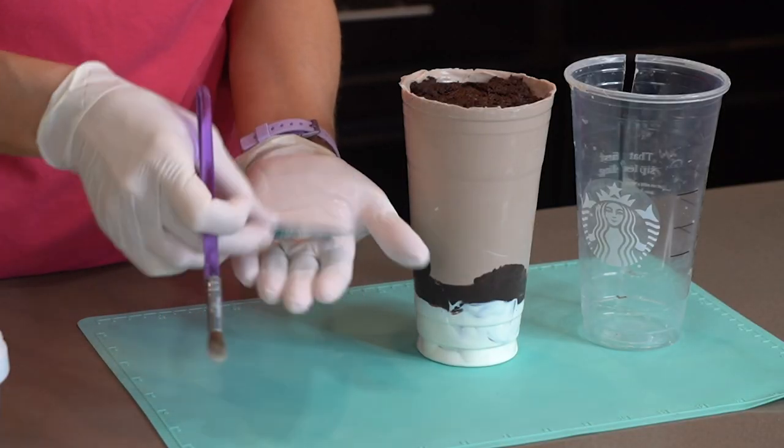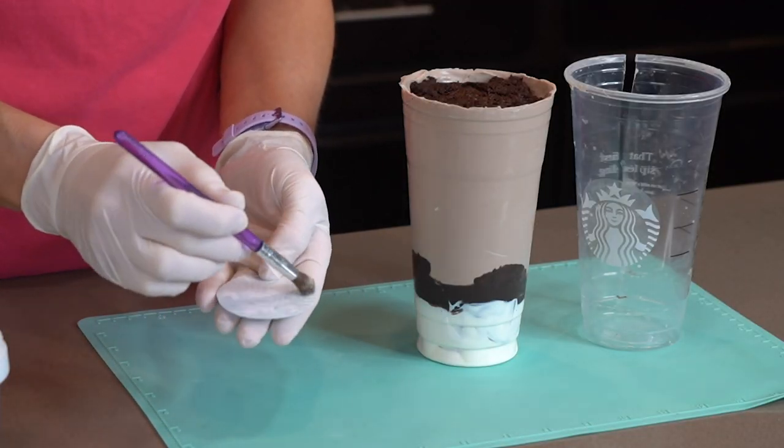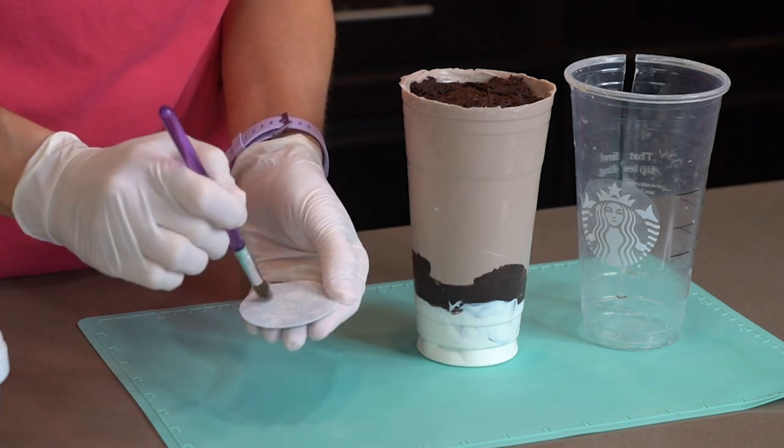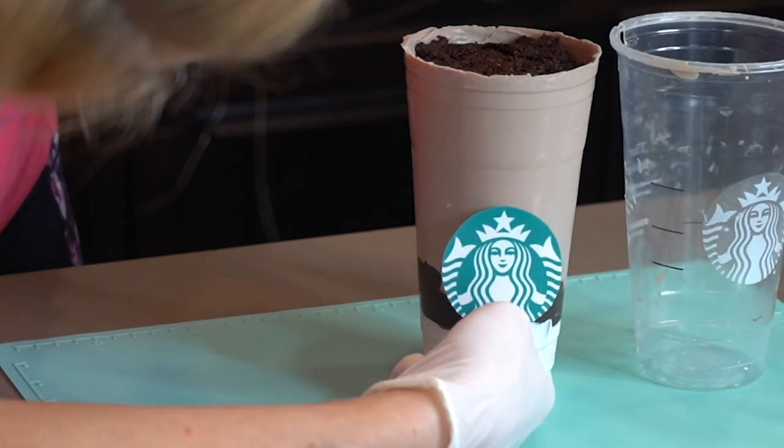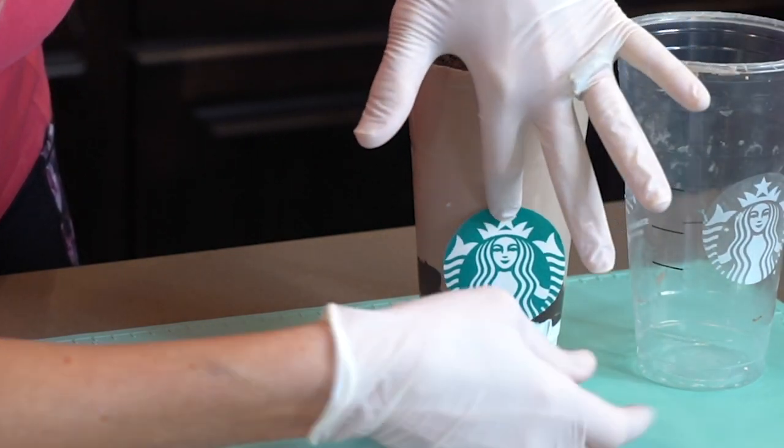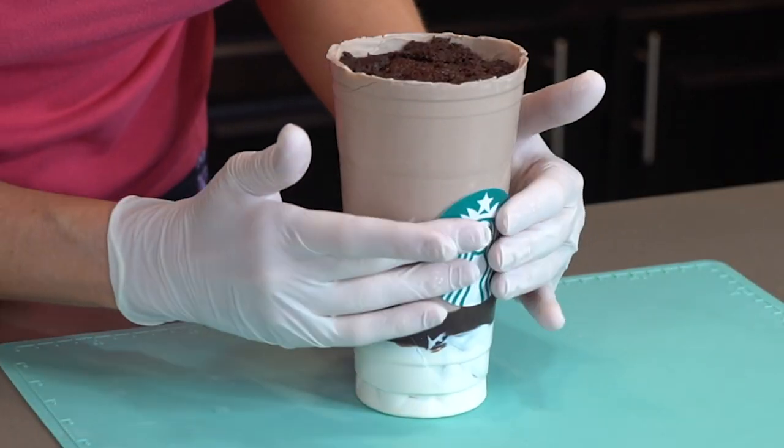For the logo, I have printed out an edible image on my edible image printer, and I am brushing it with piping gel, and then I am attaching it to the chocolate cup. If you do not want to invest in one of these edible image printers, you might be able to order some of these images online.